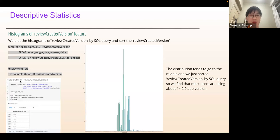For the histogram of the review created version feature, we sort the review created version. The distribution tends to go to the middle because we sorted the review created version by SQL query. We find that most users are using about 14.2.0 app version.